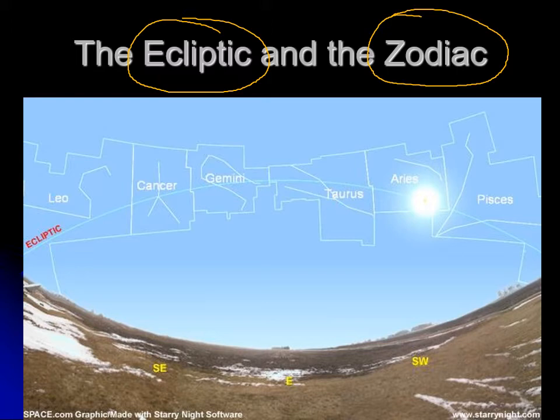The zodiacal constellations are the ones the Sun passes through over the course of a year. It turns out that not only does Earth go around the Sun — all the other planets do too — and the orbits of those planets, and the Moon's orbit around Earth, are all within a few degrees of the same plane. So not only do you find the Sun in the zodiacal constellations, but that's also where you'd look to find planets or the Moon.